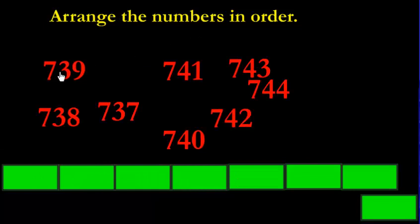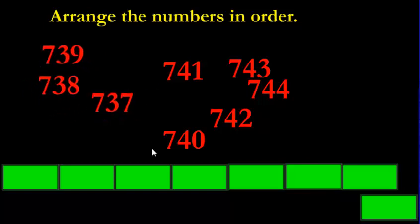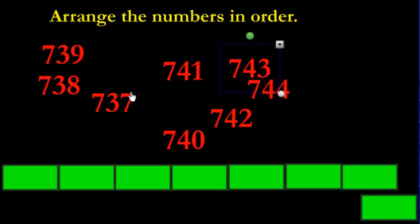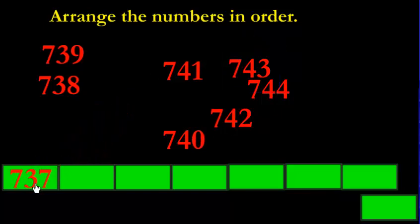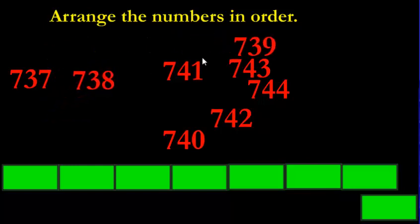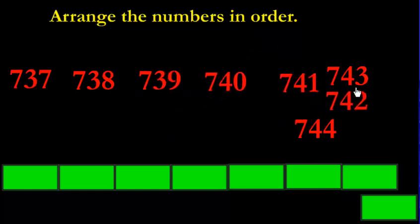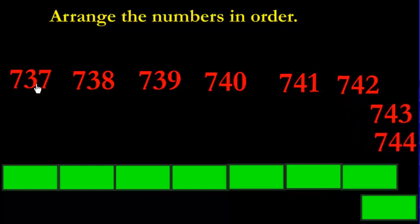Arrange these numbers in order. We've got sevens here — they're all 700s. So now we just look at the last two digits: 39, 38, 37, 41, 43. What's the smallest? It's going to be 37. So: 737, 738, 739, 740, 741, 742, 743, 744. You see the pattern with the last two digits? That's what you need to be focusing on.